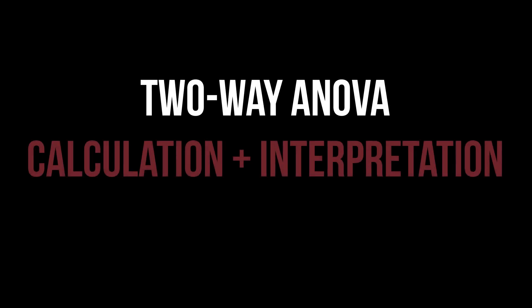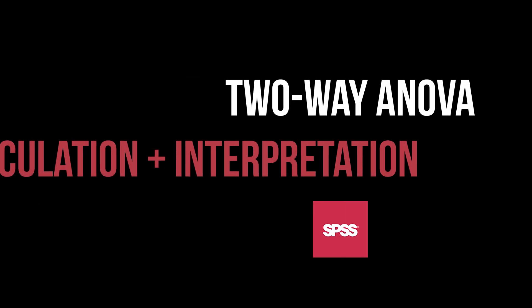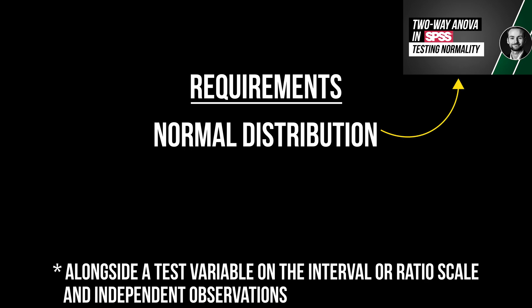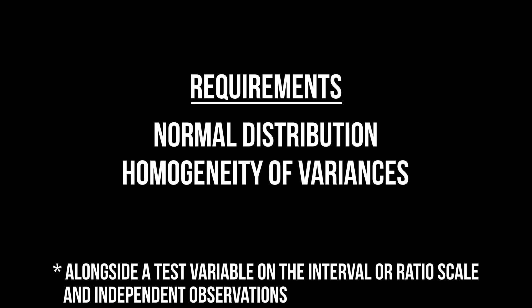This tutorial shows you how to calculate and interpret the two-way ANOVA in SPSS. Like other analytical tests, the two-way ANOVA has a few requirements. The essential ones are normal distribution, which I have already shown in detail in the linked video, and homogeneity of variance, which I will show alongside in this video.